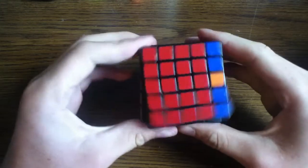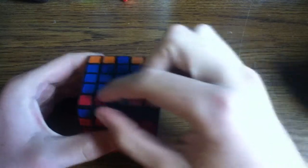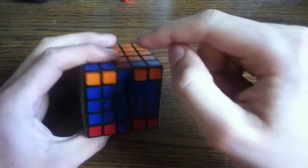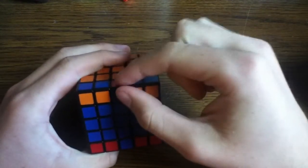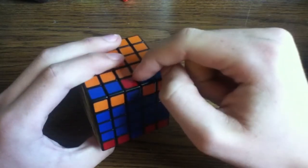What that algorithm did is it took these groups of edge pieces and it took the middles and switched them. See, these blue and orange pieces are missing their blue and orange middle piece, which is over here, and same with the blue and red piece, right here.